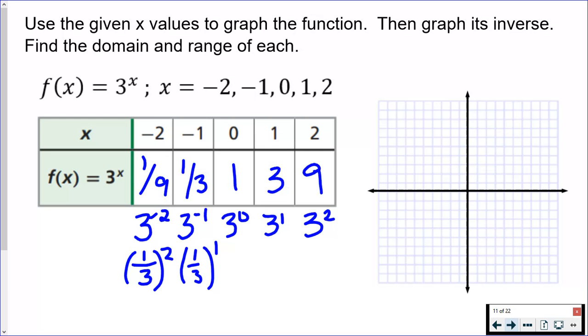Now we just simplify these values. So 1 third squared is 1 ninth, 1 third to the first is 1 third, 3 to the 0 power is 1 because anything to the 0 power is 1, 3 to the first is 3, 3 squared is 9.